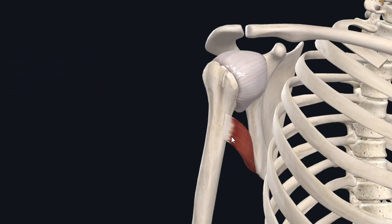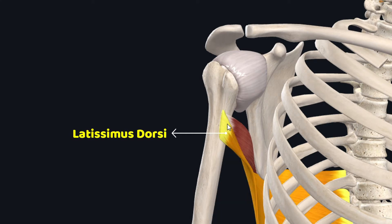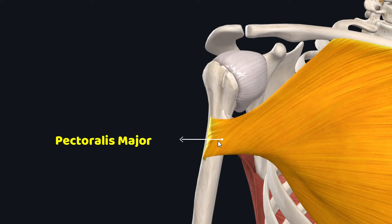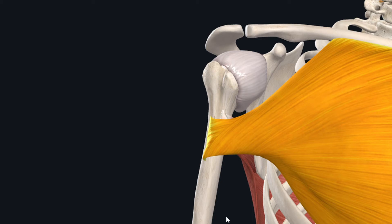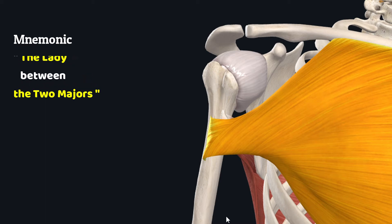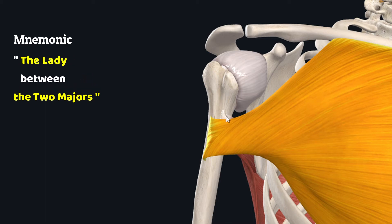The tendon of insertion of the teres major muscle has a close relation with the insertion of the latissimus dorsi and pectoralis major muscles. The latissimus dorsi inserts just lateral to the teres major onto the floor of the intertubercular groove, while the pectoralis major inserts further lateral to the latissimus dorsi onto the lateral lip of the intertubercular groove of the humerus. This arrangement can be remembered through the mnemonic: the lady between the two majors — 'lady' referring to the latissimus dorsi, and 'two majors' referring to the pectoralis major and teres major muscles.